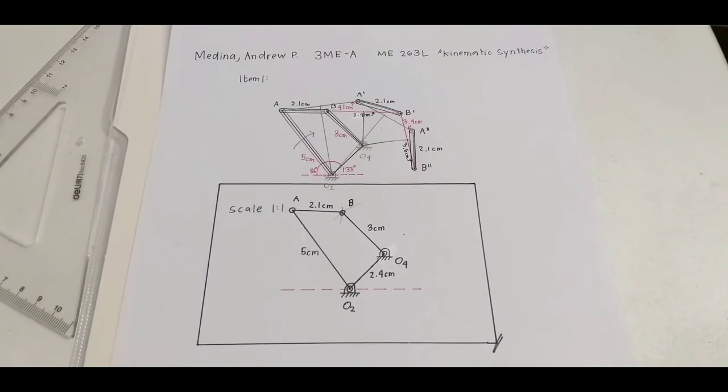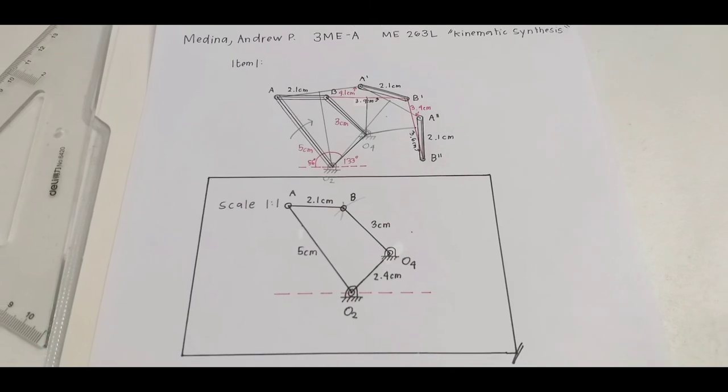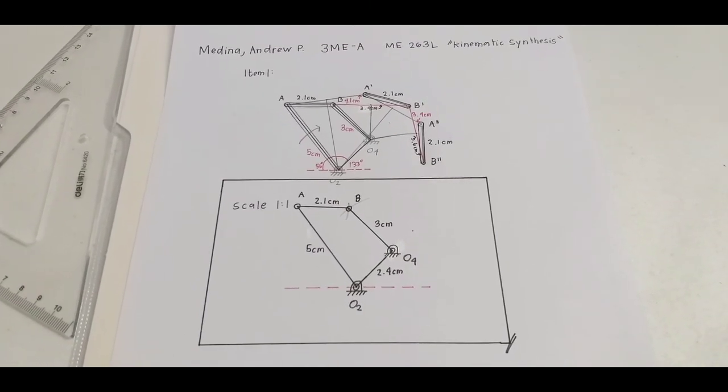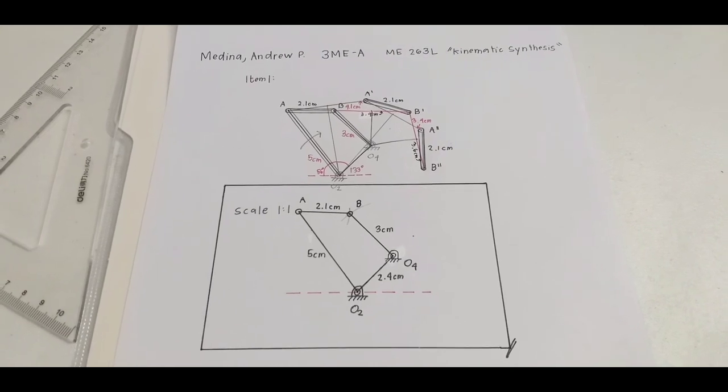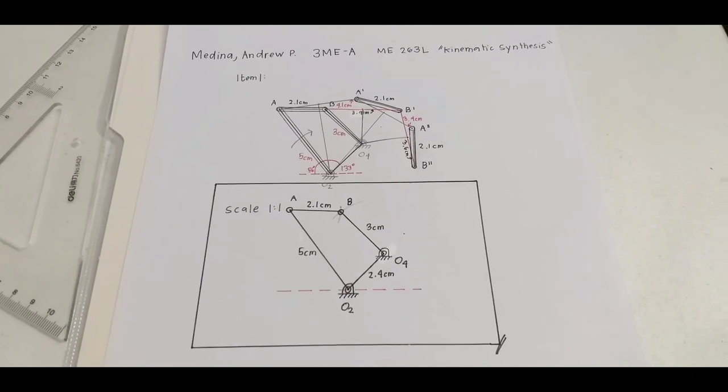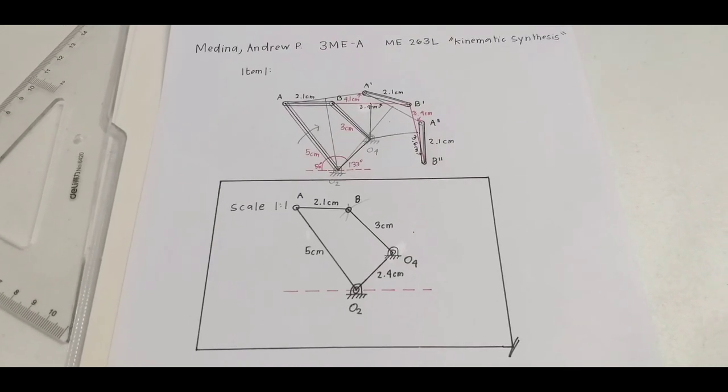Alright, so your final answer should look like this. Notice how I displayed the scale and I also displayed the appropriate dimensions of linkages for a four bar mechanism. Thank you and have a nice day!